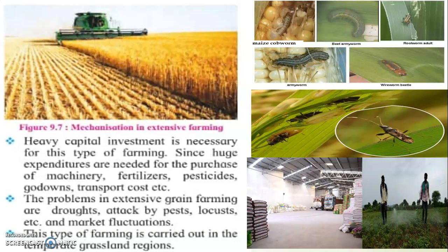Another disadvantage is market fluctuation. For example, onion and potato prices today are 40 to 50 rupees per kg. Previously, onions were available for 8 to 20 rupees per kg, and during shortage, they reached 80 to 100 rupees per kg. This is fluctuation — the rates of buying and selling articles in the market keep changing. Market fluctuation is therefore also a major disadvantage for extensive grain farming.